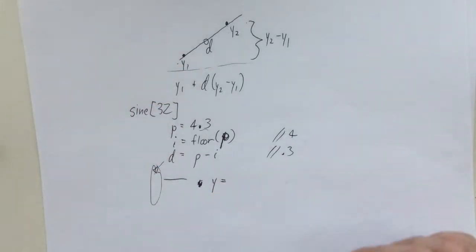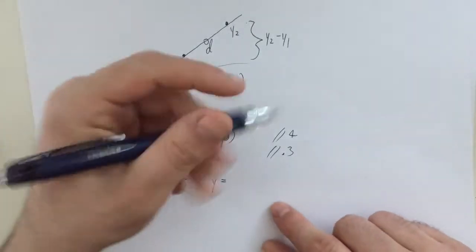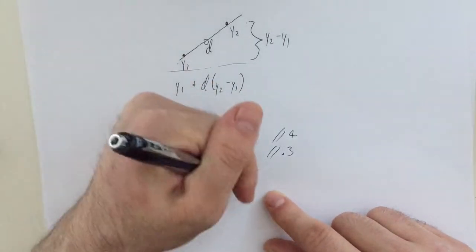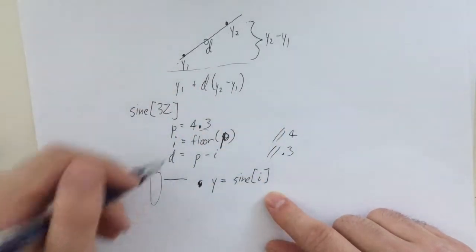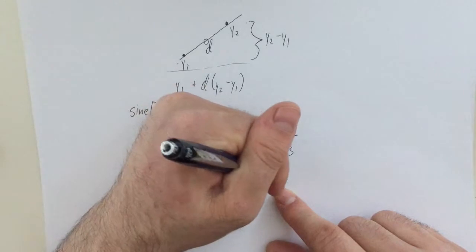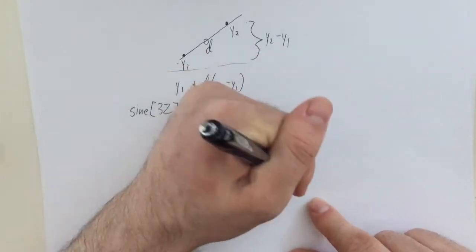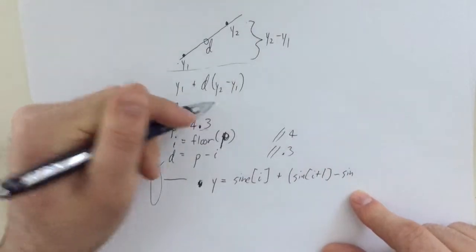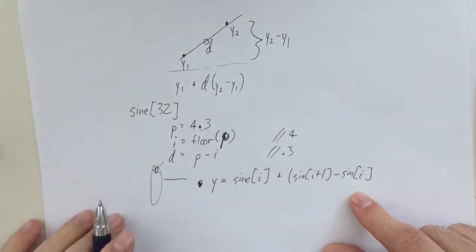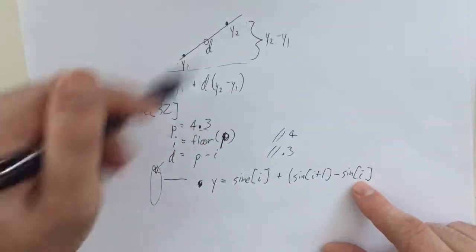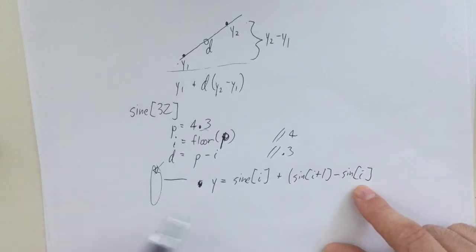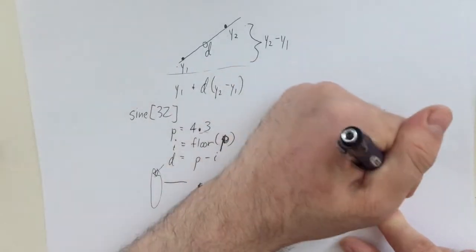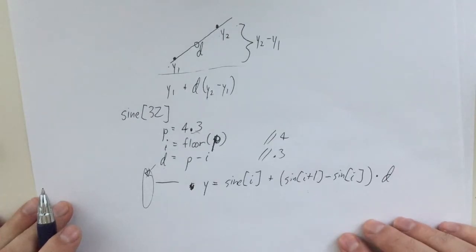So Y equals, let's see, it's going to be sine, our table of i, right? That's for integer. I'm sorry, I'm picking, I'm looking at my hand to peek at what I call the variables. Plus sine of i plus one, the next sample minus this one, right? Because this minus that. Hopefully it's not too confusing with more than one repurposing Y here from the original math example. So we have the difference in the two samples, and then we're going to multiply it by that distance, that fractional amount. Okay, so this will give us the right number.